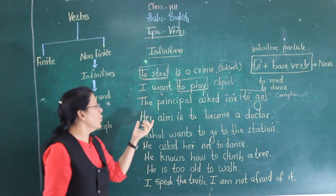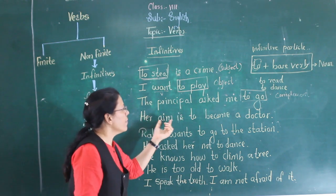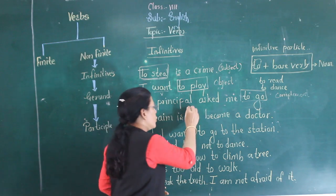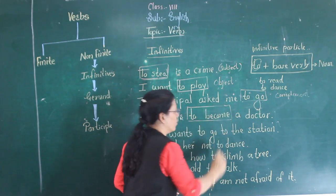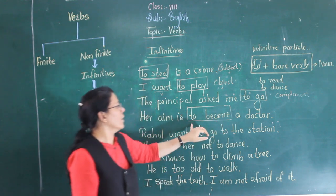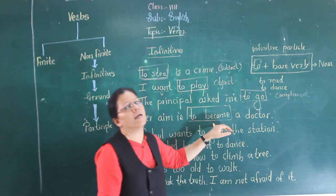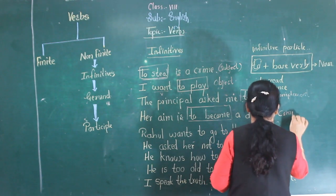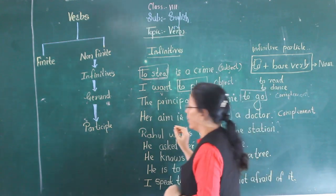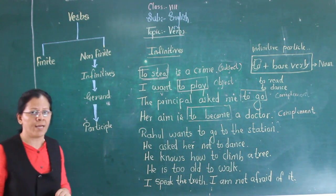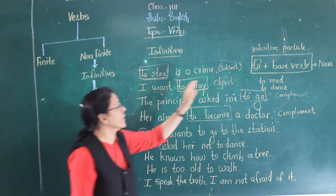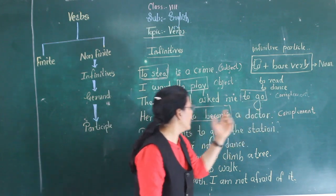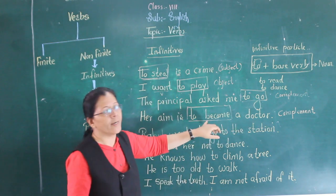Now let us move to the next example. 'Her aim is to become a doctor.' Here, 'her aim' is the subject, 'is' is the verb, and 'to become' is the infinitive. 'To become' acts as a complement of the verb.